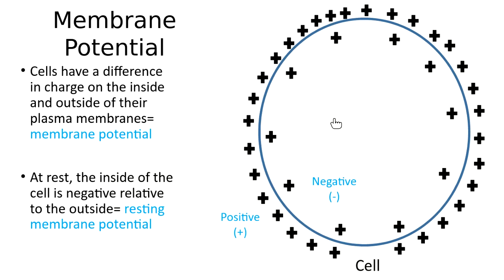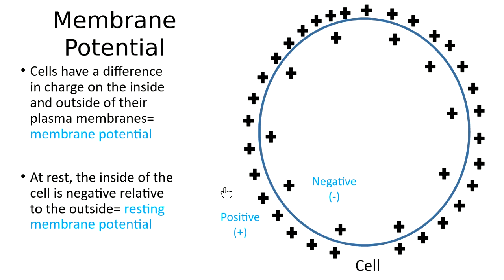Looking at this diagram, I've represented this with positive charges. We've got a lot of them on the outside of the cell and many fewer on the inside. We've got ions that are positively charged and a difference in the amount on the two sides of the membrane. We've got far less positive charge on the inside and far more on the outside, so we say the membrane potential is negative on the inside relative to the outside.